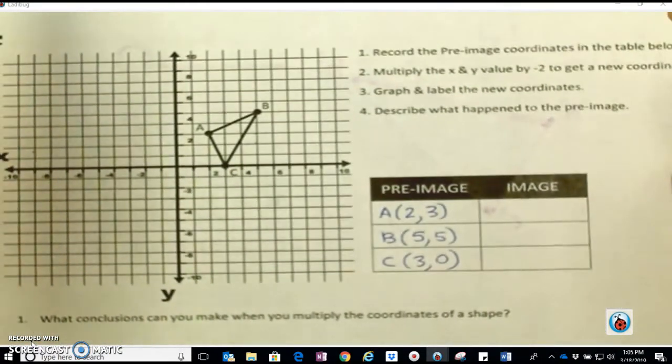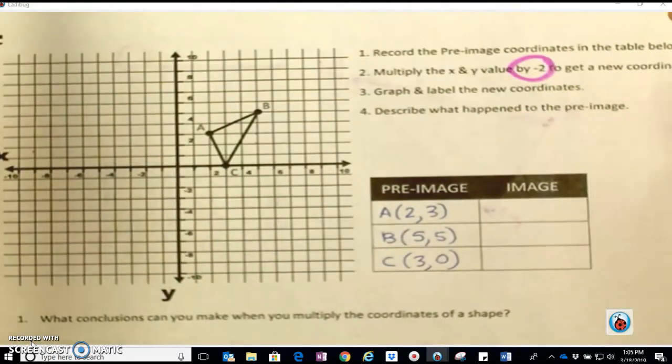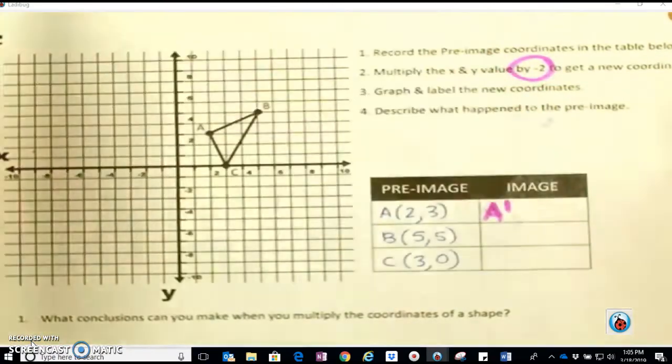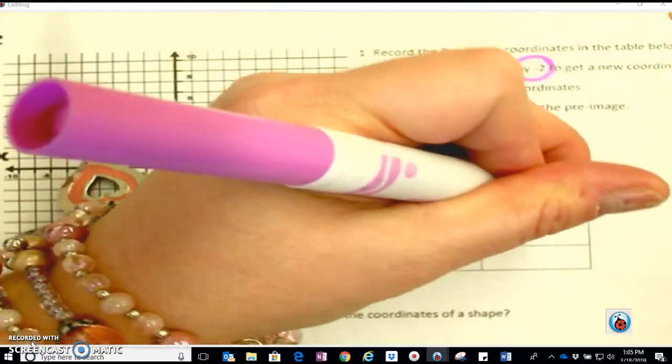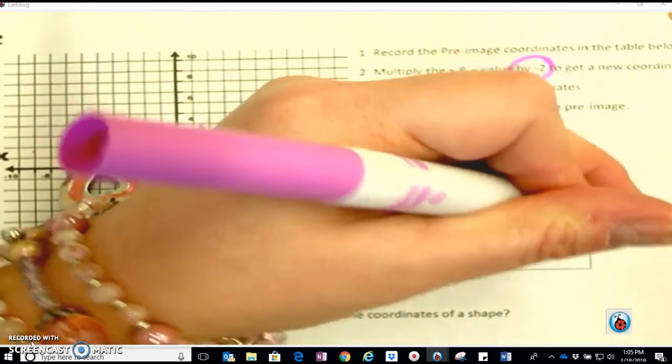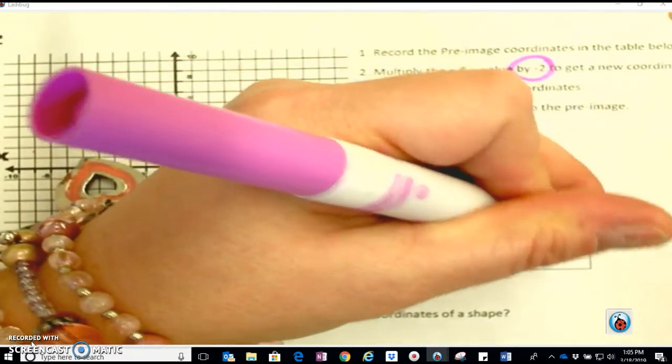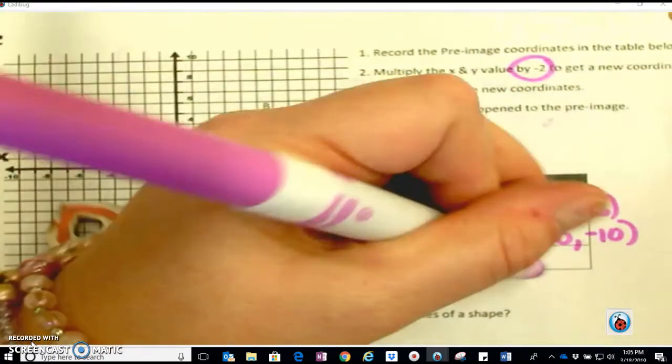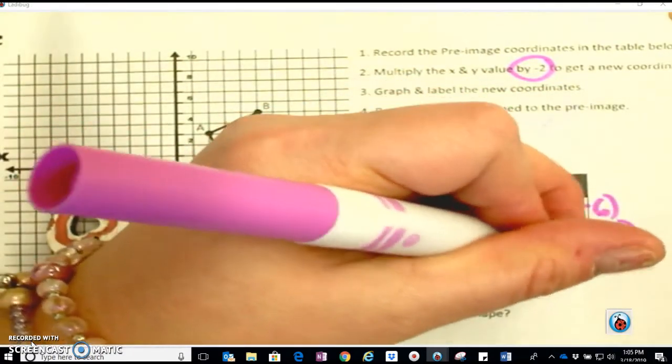Then here on the back, now we're going to multiply by negative 2 and see what happens to the shape. So A prime is going to be negative 4, negative 6. B prime is going to be negative 10, negative 10. And C prime is going to be negative 6, 0.